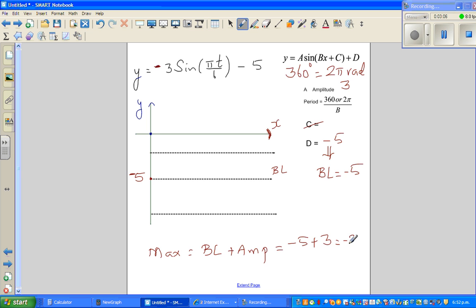Your minimum is baseline minus amplitude, so this will be minus 5 minus 3, which is minus 8. This is your minimum which is minus 8, and this is your maximum which is minus 2, and this is your origin which is at 0. The next important thing is you have to decide the period.